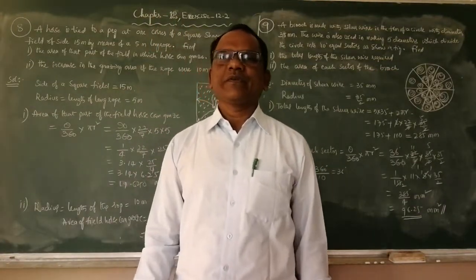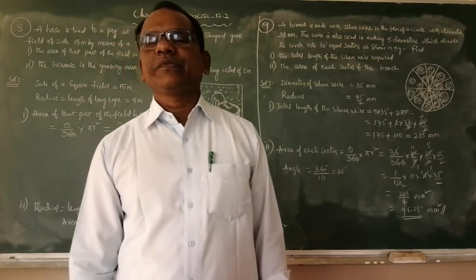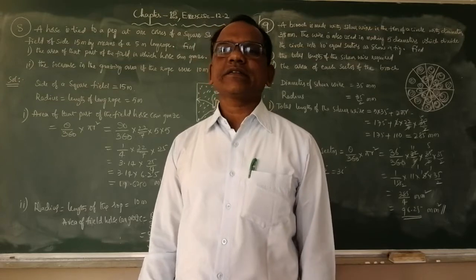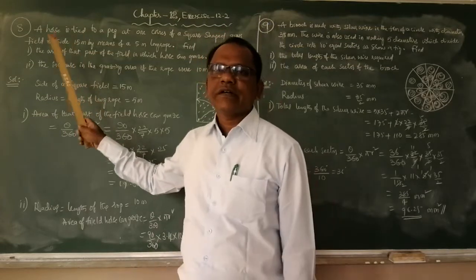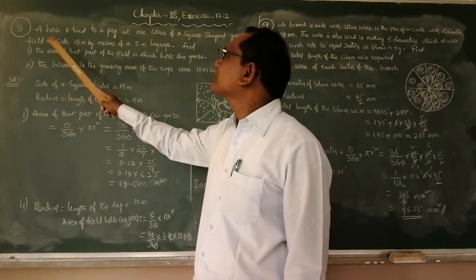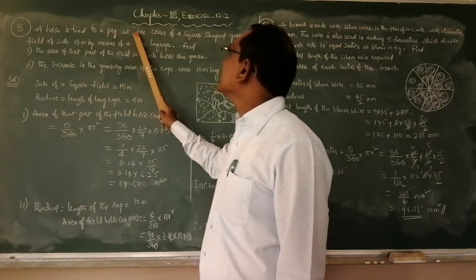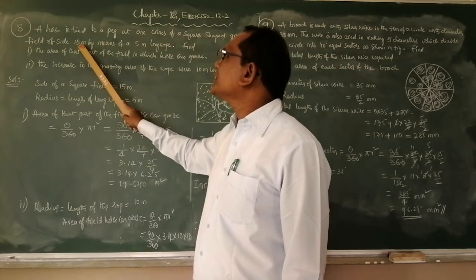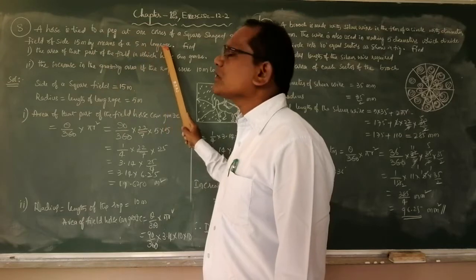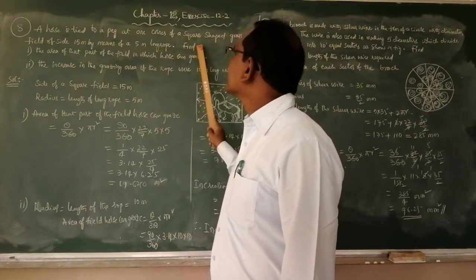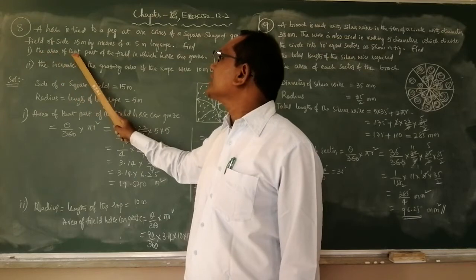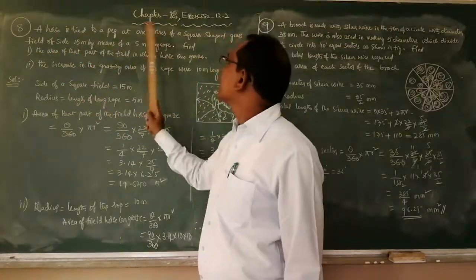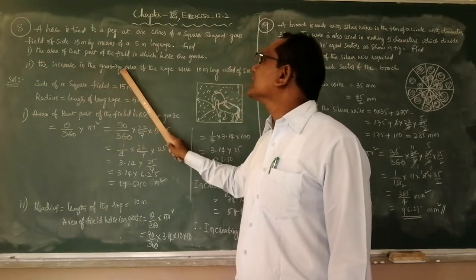Good morning children, welcome to today's class. Today we are going to discuss Exercise 12.2, problems 8 and 9. The eighth problem: a horse is tied to a peg at one corner of a square-shaped grass field of size 15 meters, by means of a 5-meter long rope. Find first the area of the part of the field in which the horse can graze.